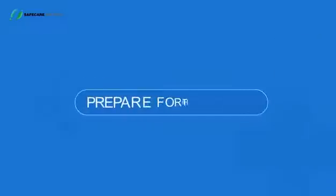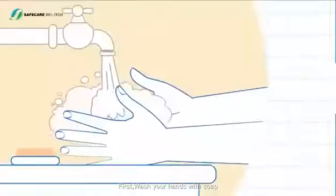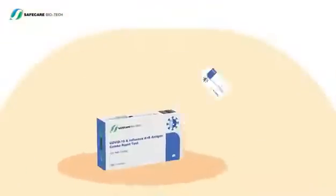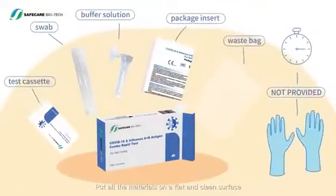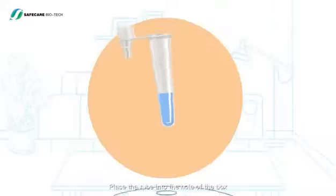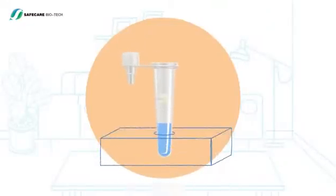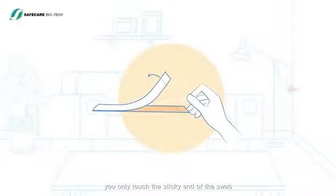Prepare for the test. First, wash your hands with soap and water or hand sanitizer. Put all the materials on a flat and clean surface. Carefully peel off the foil film of the tube. Place the tube into the hole of the box. Remove the swab from the package and make sure you only touch the sticky end of the swab, but not the soft tip.